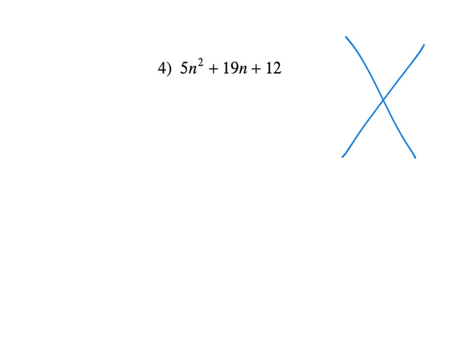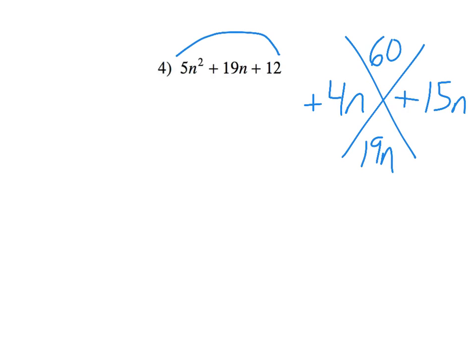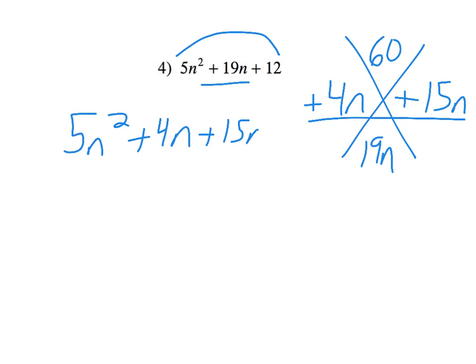Alright, final example. Five — multiply these — five times twelve is sixty. And I need to add to nineteen n. Well, sixty: one and sixty — not going to work. And since these are both positive, I need two positives. Twenty and three would make twenty-three. Six and ten would make sixteen. So, I can do four and fifteen. Put your variable behind — four and fifteen make nineteen. These are going to take the place of your middle term. So, you have five n squared plus four n plus fifteen n plus twelve.